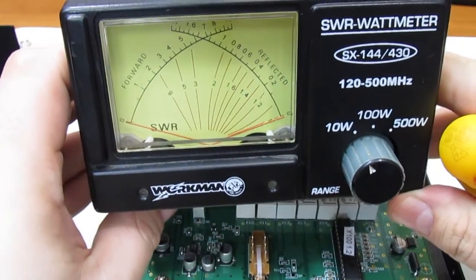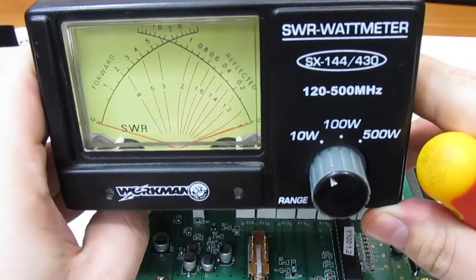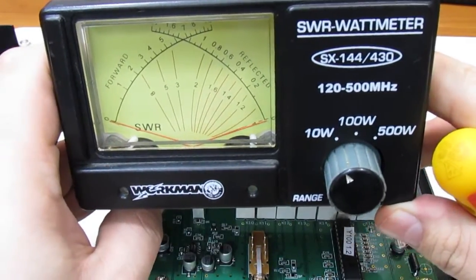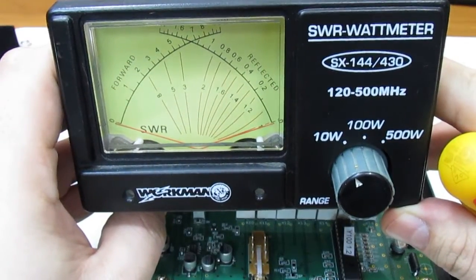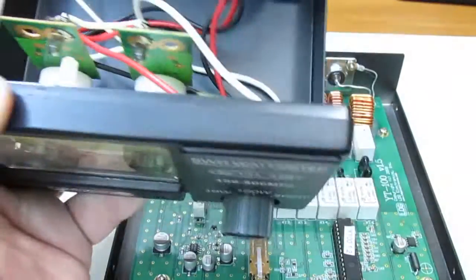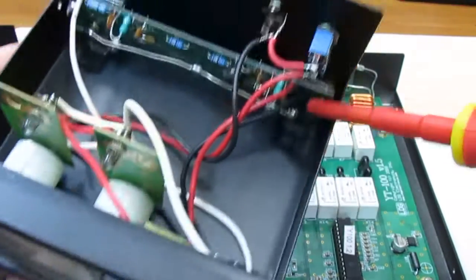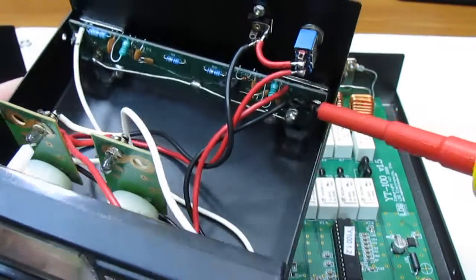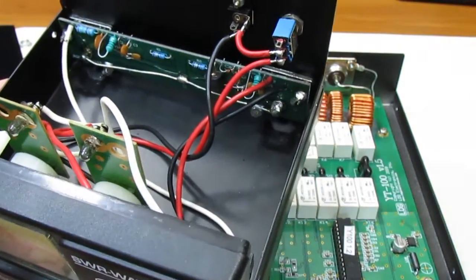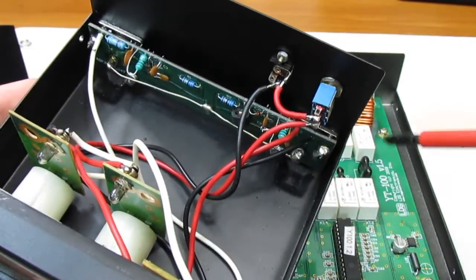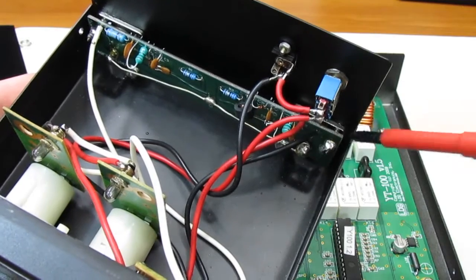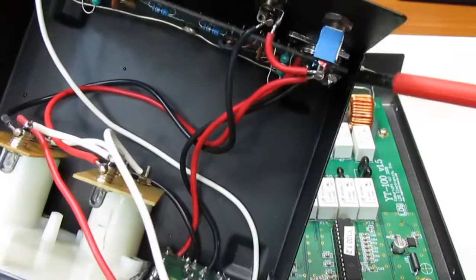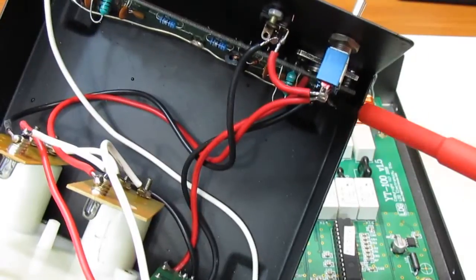I have one of those, the Workman SX-144/430. I mean it works nice. I haven't checked how reliable it is, but as far as the grounding and the connections are concerned, this is complete and utter garbage. So if you have one of those, do yourself a favor. Open it up. Remove those solder points. Put in some real machine screws, and especially here with the PCB, don't just put something on top of here.